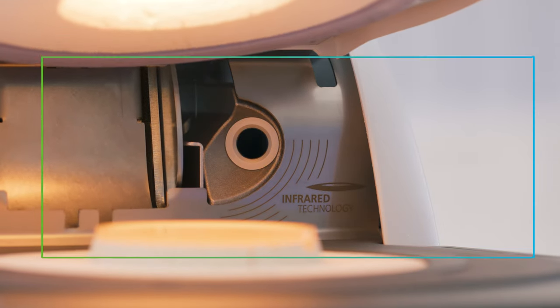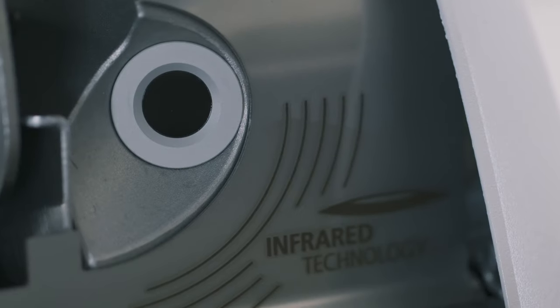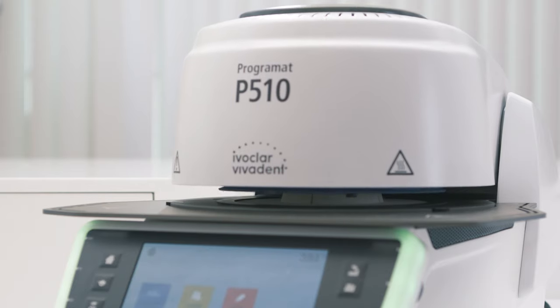Programat Video Tutorial Chapter 5: Introduction to the Programat Infrared Technology. The Programat Infrared Technology can reduce the firing time by up to 25% compared with the firing time of a conventional ceramic furnace.